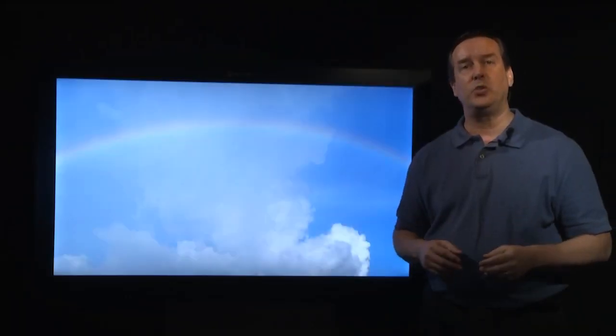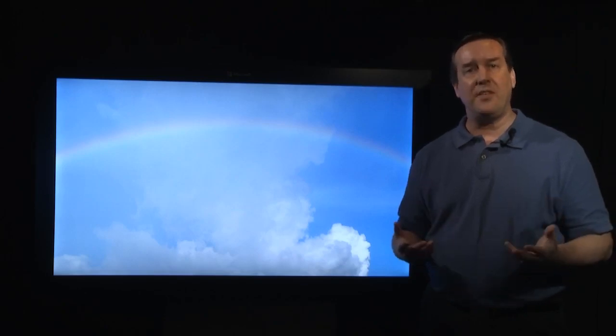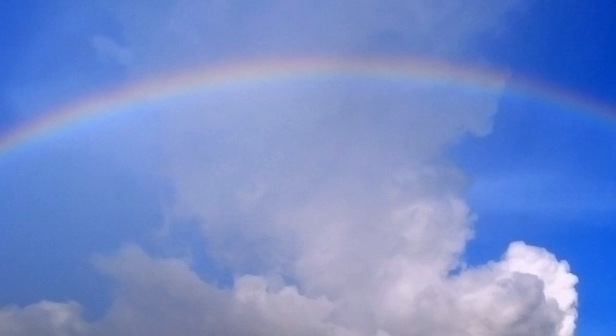Sometimes, after a rainstorm, one can see explicit evidence that the white light of the sun is composed of all the colors of the rainbow.